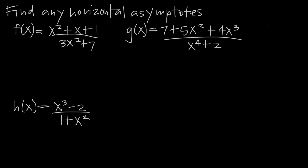We'll start with f. We notice that we have x squared plus x plus 1 in the numerator and 3x squared plus 7 in the denominator. Whenever you're looking for horizontal asymptotes, the only thing that matters is the term with the highest degree in the numerator and the term with the highest degree in the denominator. In the numerator, we have x squared, x to the first power, and a constant, which is really an x to the 0 term. So the x squared term is the highest degree term.